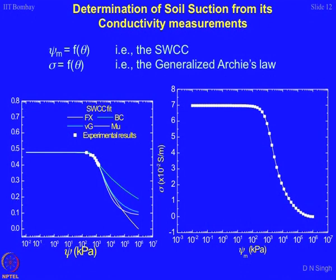For all these points, you can find out the regression coefficient, and the best regression coefficient can be used as the most suitable SWCC. By following the law that psi_m is a function of theta and sigma is a function of theta, if you plot sigma with respect to psi_m, what you get is a relationship equivalent to the SWCC. Measuring conductivity is much easier compared to measuring suction of the soil, so it is a very easy and rapid method to determine SWCC.